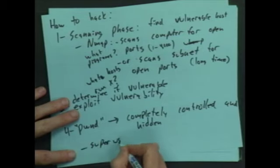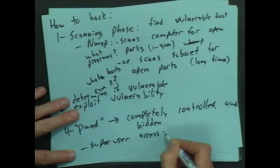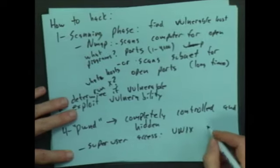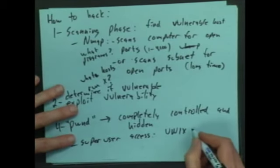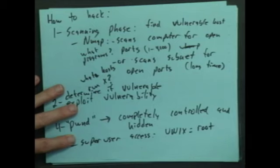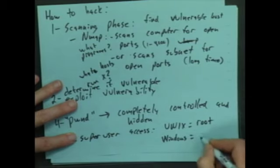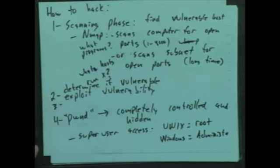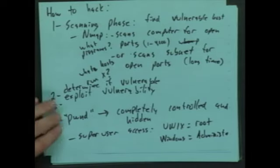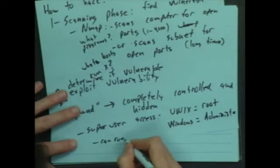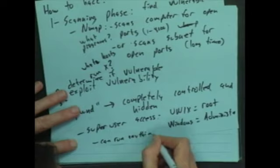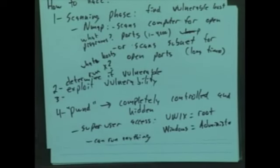The hidden part here is, let's just note here, what we need is what's called superuser access. If you're on a Unix computer, that is a Mac or a Linux, that's the user called root. On a Microsoft, it's the administrator. You want that user, that type of access. Once you have that type of access, you can do anything. You can run any code you want, you can delete files, you can do whatever you want. That's when you're owned.